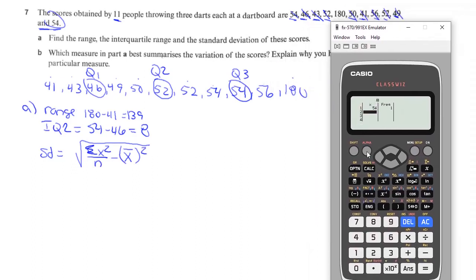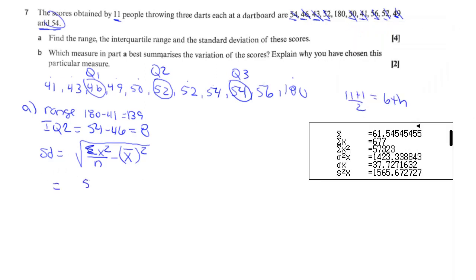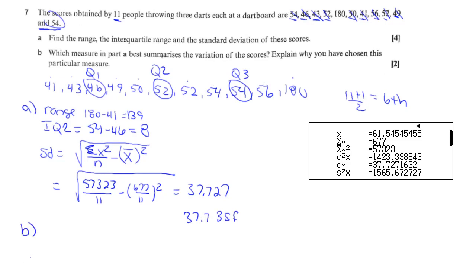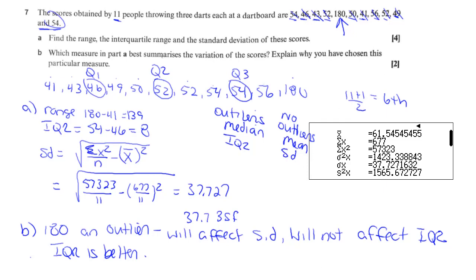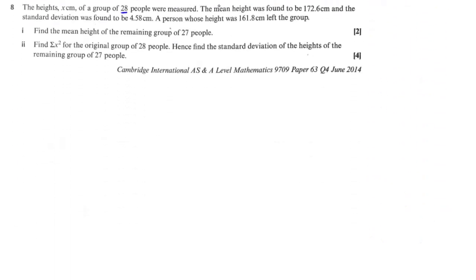For standard deviation, using the sum of X squares over n minus the mean squared, I put everything in the calculator, double-check the numbers, and read off the results. Since the mean is a decimal I can use 677 divided by 11. In part B, which is the best summary of variation: 180 is an outlier and will affect the standard deviation since it uses all numbers. The IQR only covers the middle 50%, so in this case the IQR is better. Remember: with outliers, use median and IQR; without outliers, use mean and standard deviation.